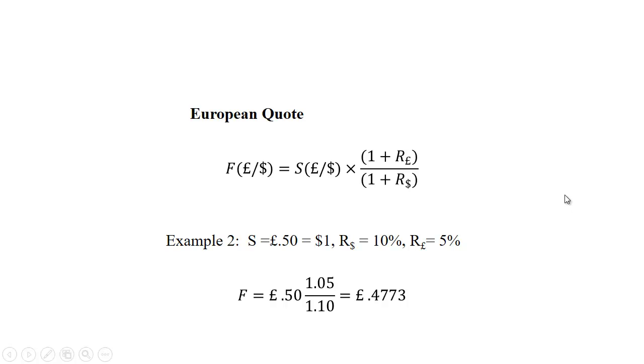If you're doing this from the European quote perspective, the forward rate is pounds to buy one dollar, F(£/$), equals the spot rate pounds per dollar, S(£/$), times now it's (1 + R£) divided by (1 + R$).